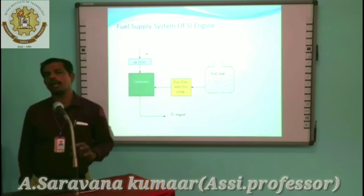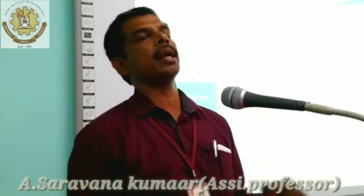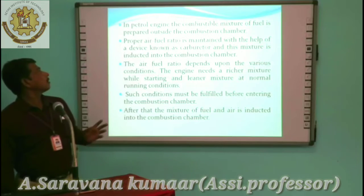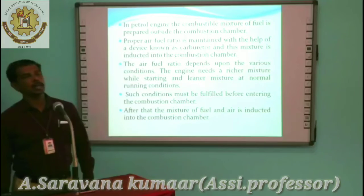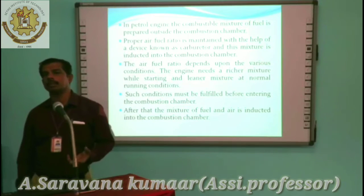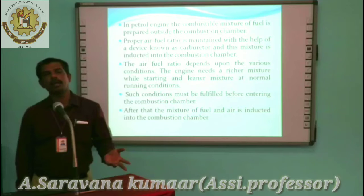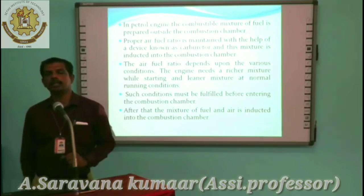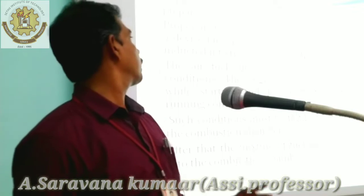Both air and fuel are mixed in the carburetor, and the mixed air-fuel mixture enters into the cylinder. In the petrol engine, the combustible mixture of the fuel is prepared outside the combustion chamber — that is a major point. The mixture is prepared in the carburetor, not like CI engines. The air-fuel ratio depends on various conditions.